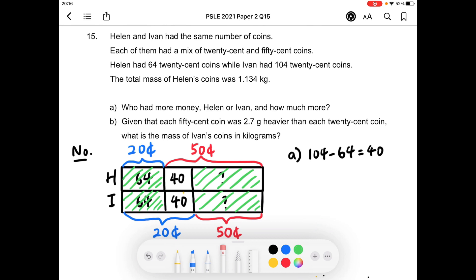So you can see that the only difference in the amount of money they had is the 40, 50 cent coins that Helen had and the 40, 20 cent coins that Ivan had. So if you want to find the difference, what you can do is to take 1 50 cent coin minus 1 20 cent coin, you will have 30 cents there. And then there are 40 such 30 cents. So it's 40 times 30 cents. You will get 12 dollars. So that's the answer for part A.